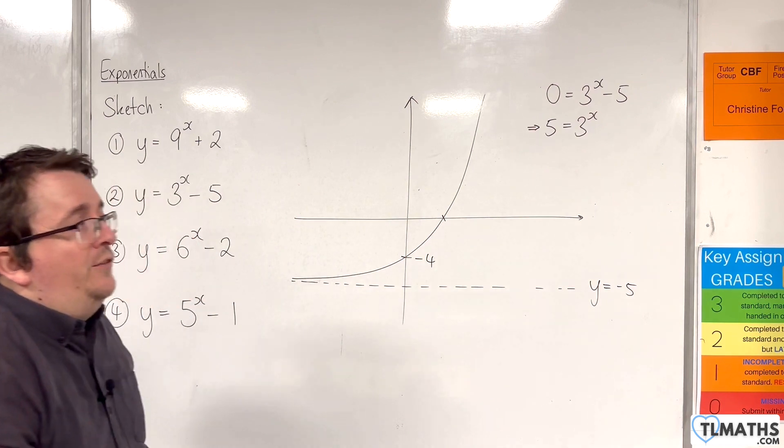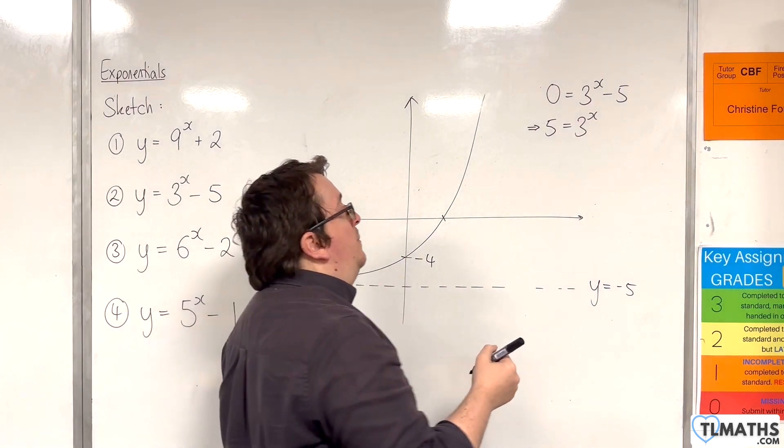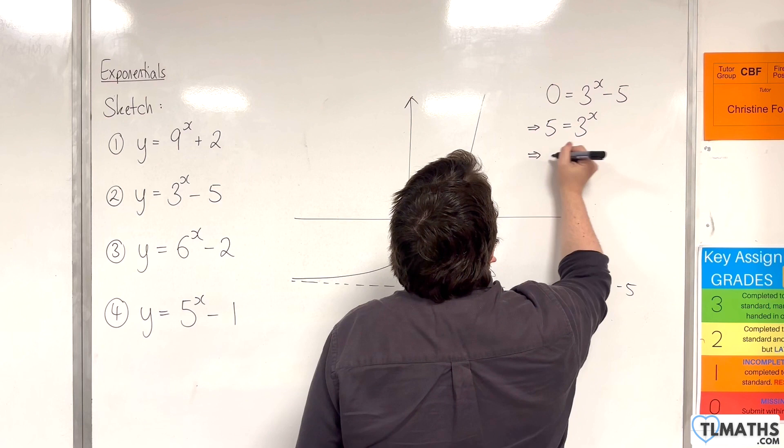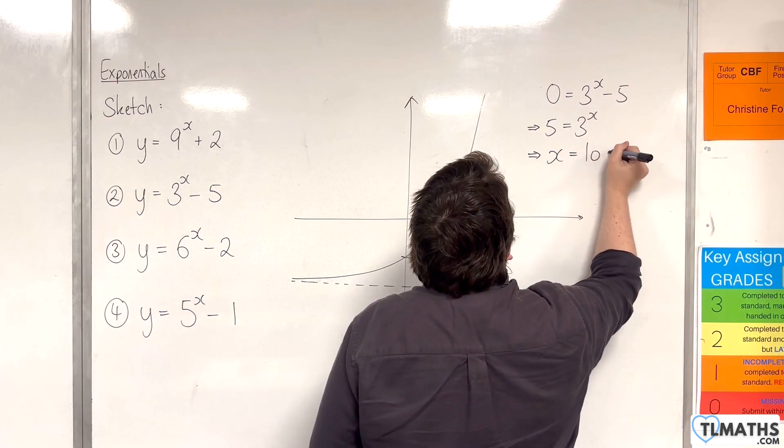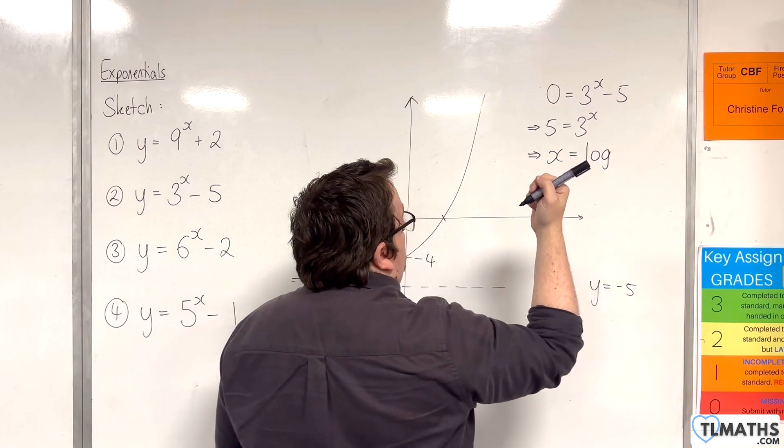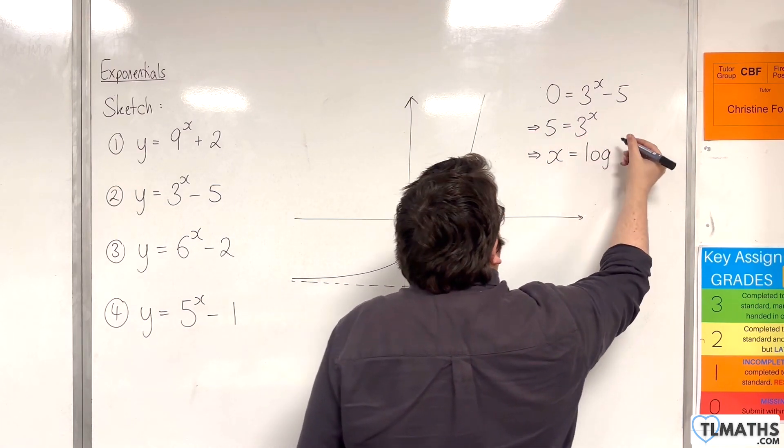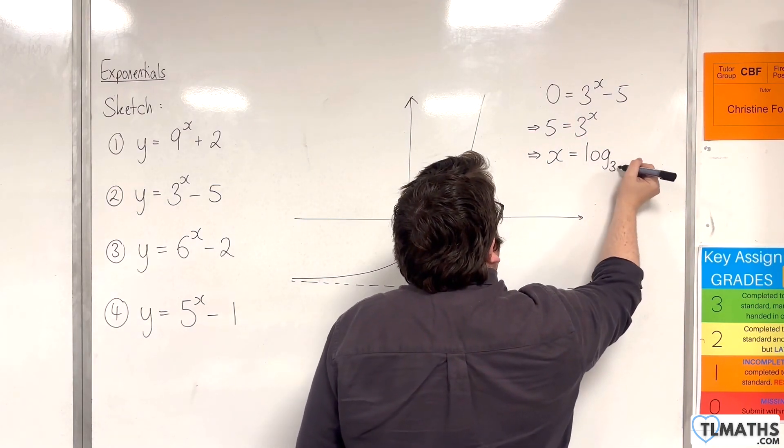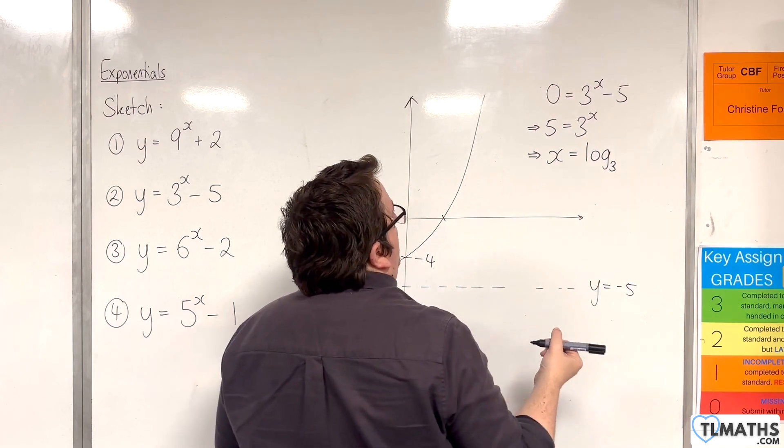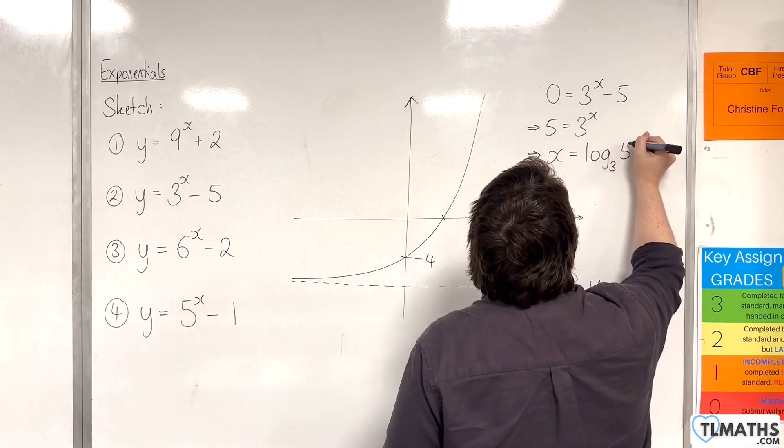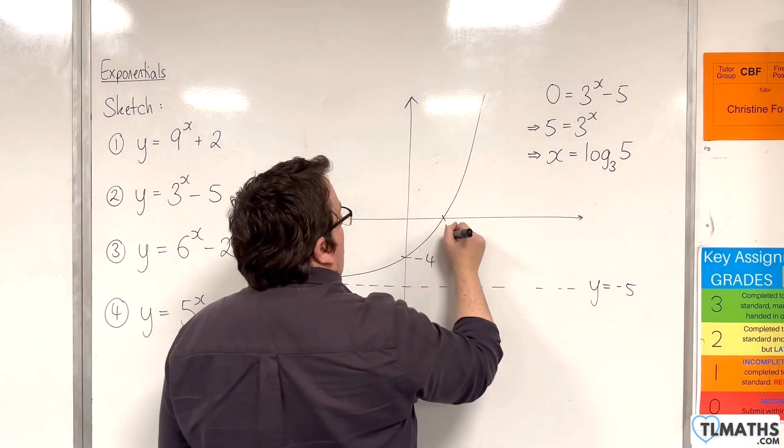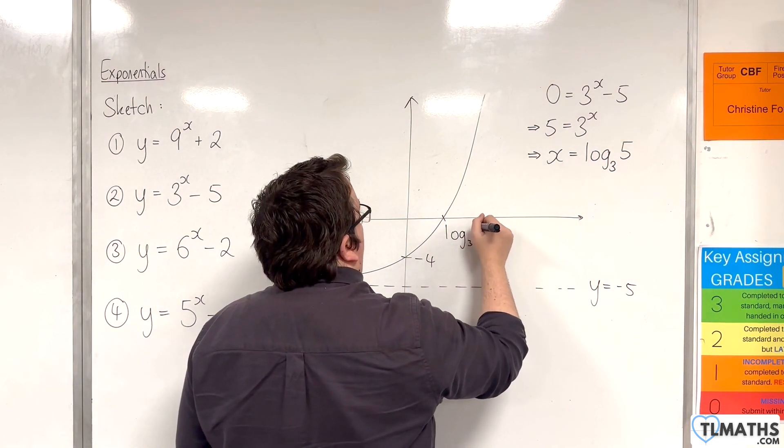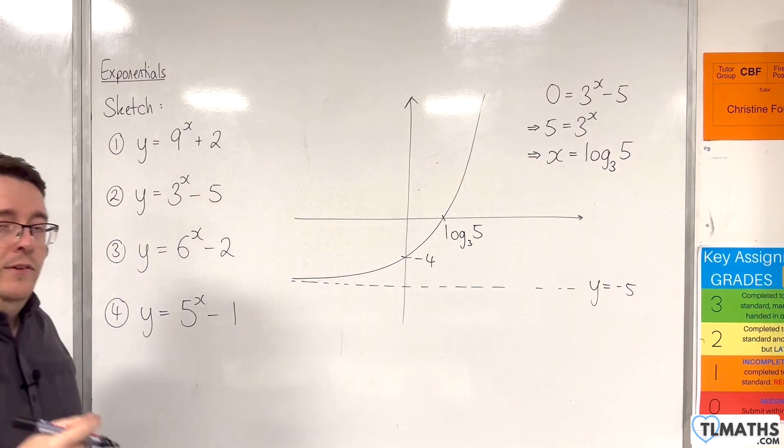Now the solution to this is used as logarithms. We saw an example of that in the previous video. And the way that you write this is x is equal to log, and then we have the base number which is 3. We write that just below and smaller. And that will be log base 3 of 5. And that is the exact point at which this curve crosses the x-axis.